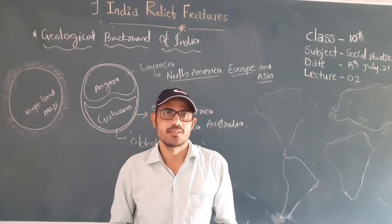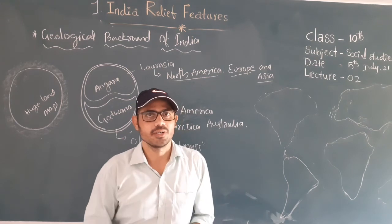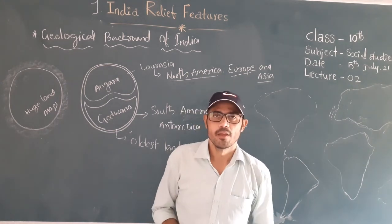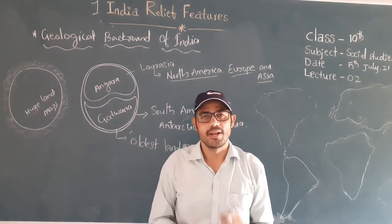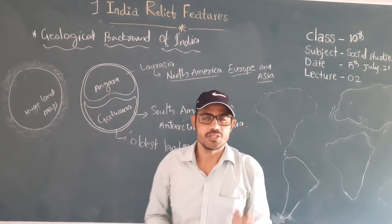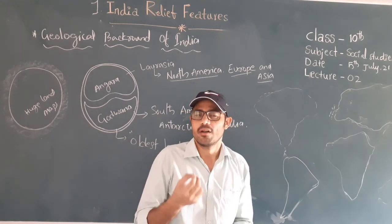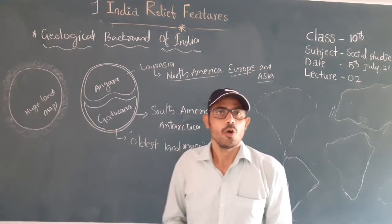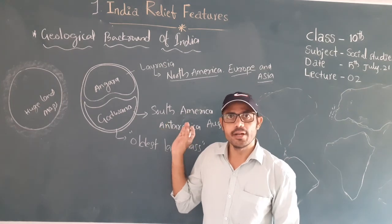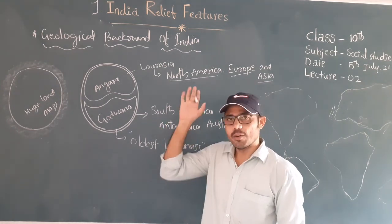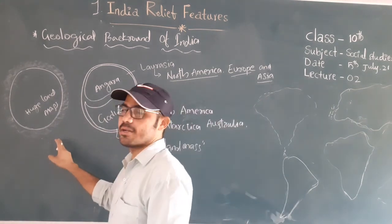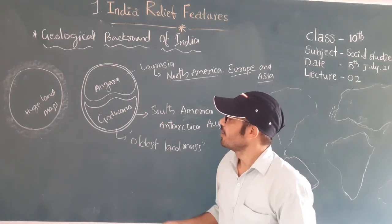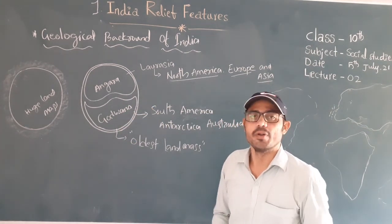Hi students, today we are going to discuss the first lesson on India Relief. In the first lecture, we discussed where India is located on the globe, its longitudinal and latitudinal location, and how we decide the coordinates — 8 to 37 degrees north and 68 to 97 degrees east. We will also learn about India's ancient landmass — whether it belongs to Angara or Gondwana.